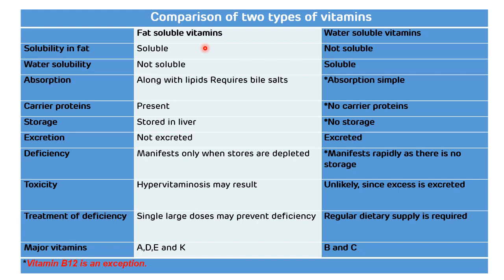Fat-soluble vitamins are not excreted, while water-soluble vitamins are excreted. Deficiency of fat-soluble vitamins manifests only when stores are depleted, while deficiency of water-soluble vitamins manifests rapidly as there is no storage. Toxicity may result from fat-soluble vitamins, while toxicity is unlikely with water-soluble vitamins since excess is excreted. Treatment of fat-soluble vitamin deficiency can be done by single large doses to prevent deficiency, while water-soluble vitamins require a regular dietary supply.